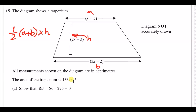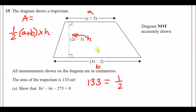We need to show that the given information forms the stated quadratic equation. Using the area formula and replacing a with 153: area = ½ × (x + 5 + 3x − 2) × (2x − 3). Adding the x terms gives 4x and combining constants gives +3, so the bracket becomes (4x + 3), multiplied by the height (2x − 3).